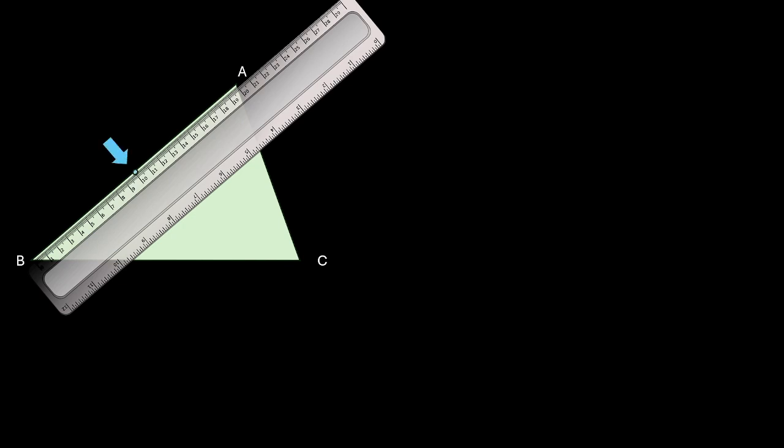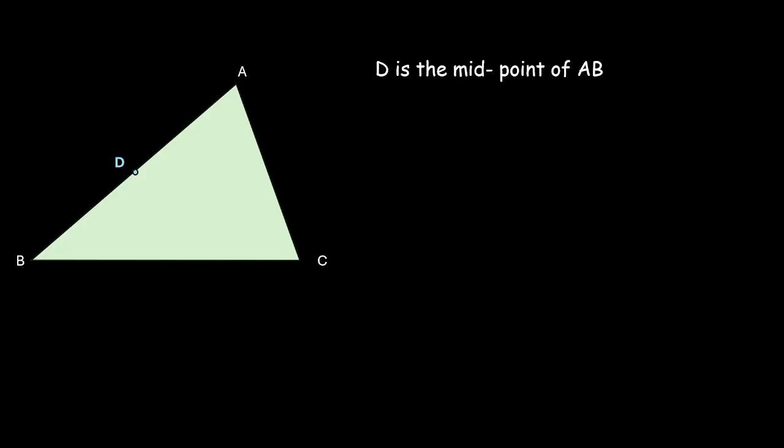Let us draw a triangle and name it as triangle ABC. Let's measure the side AB. AB is 20 centimetres, so its midpoint will lie at 10 centimetres. Let's call this point D. D is the midpoint of AB, which means AD is equal to DB.